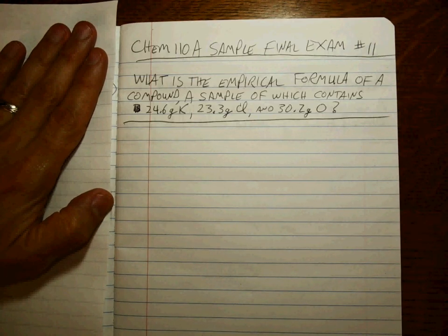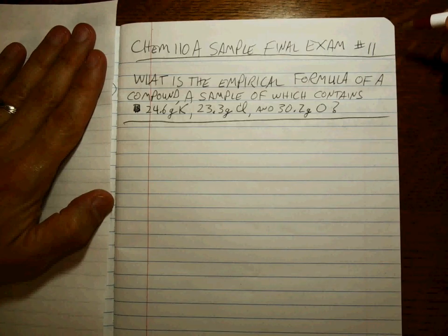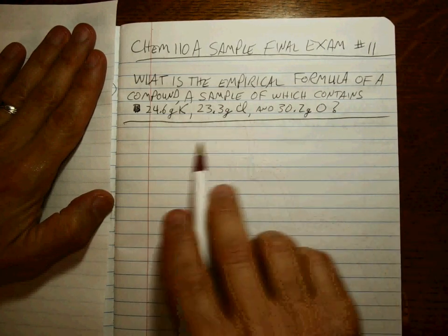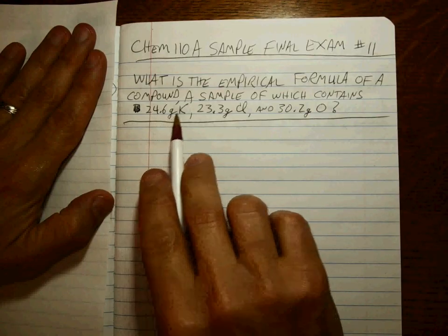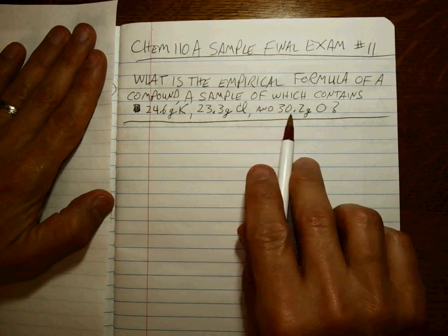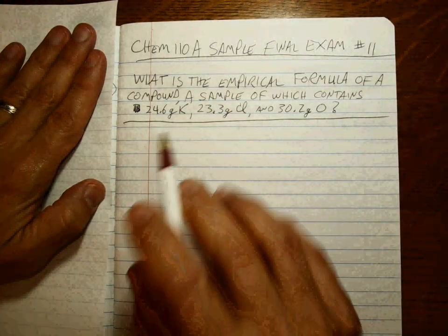Chem 110A sample final exam problem number 11. What is the empirical formula of a compound sample which contains 24.6 grams of potassium, 23.3 grams of chlorine, and 30.2 grams of oxygen?